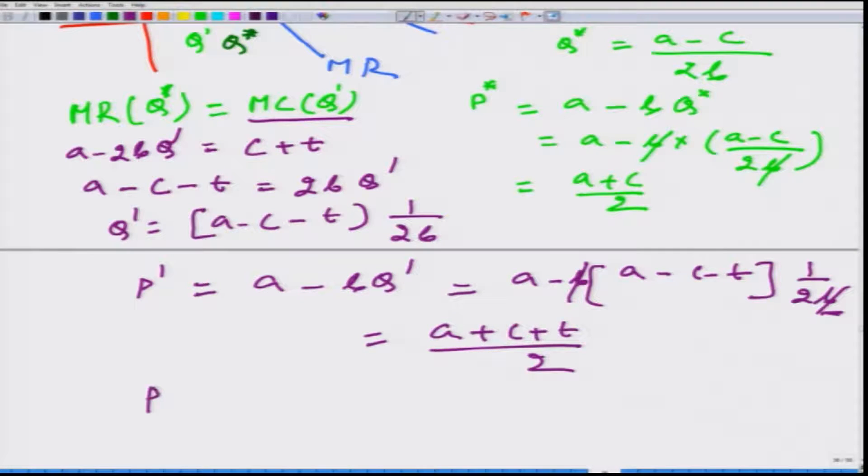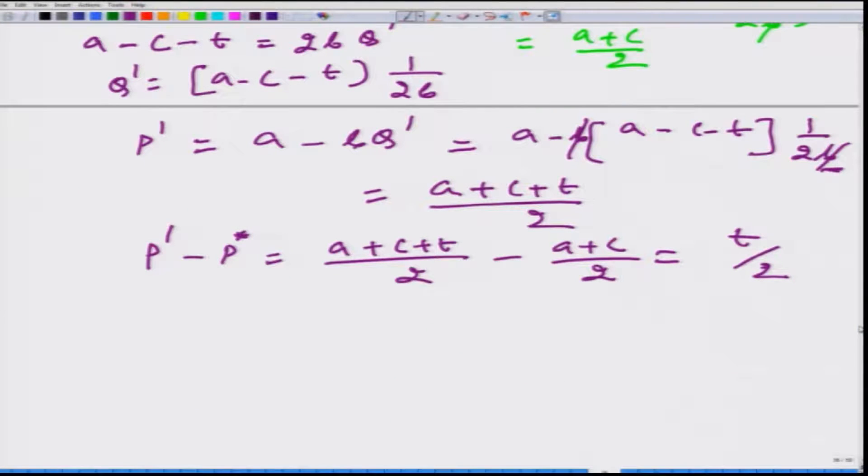What do we see? That P' is greater than P*. How much greater? We can calculate (a+c+t)/2 - (a+c)/2 which comes out to be t/2. So the government imposes a tax t and the consumer has to pay a price higher by t/2 amount. What it means is that the tax here in this particular case is equally shared by the monopolist as well as by consumers. Part of it, t/2, comes from the monopolist and t/2 the monopolist is able to pass it on to the consumer.